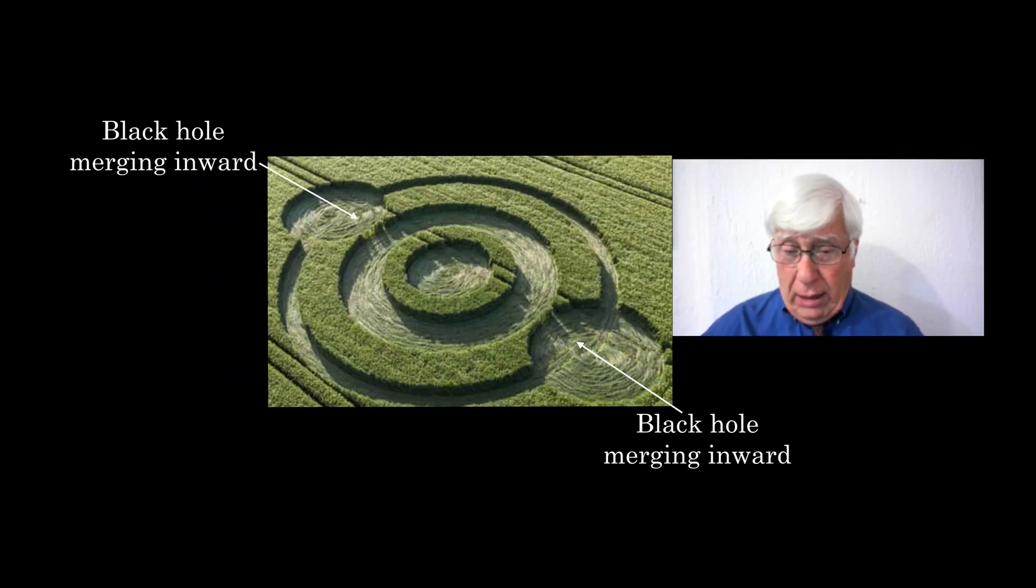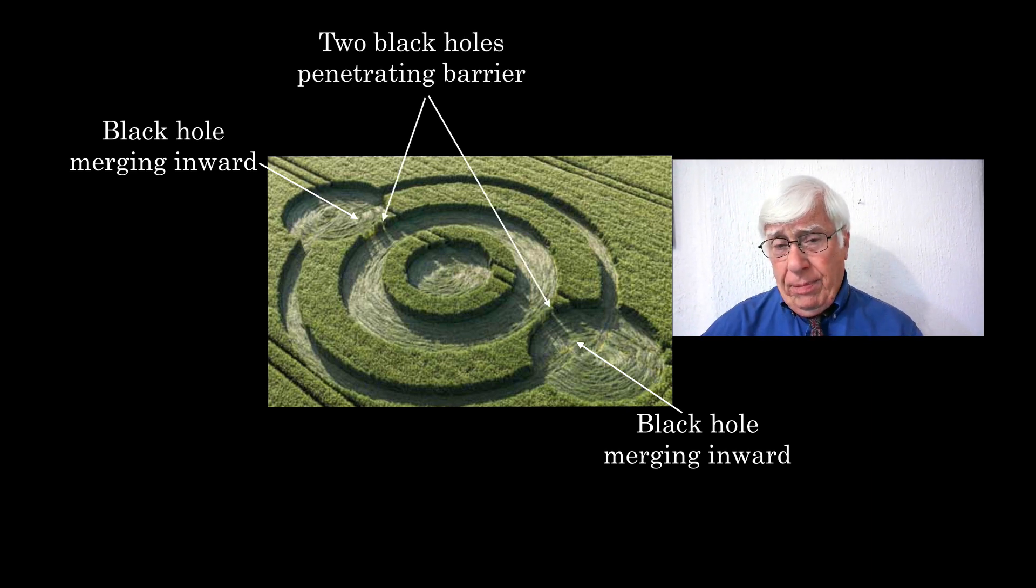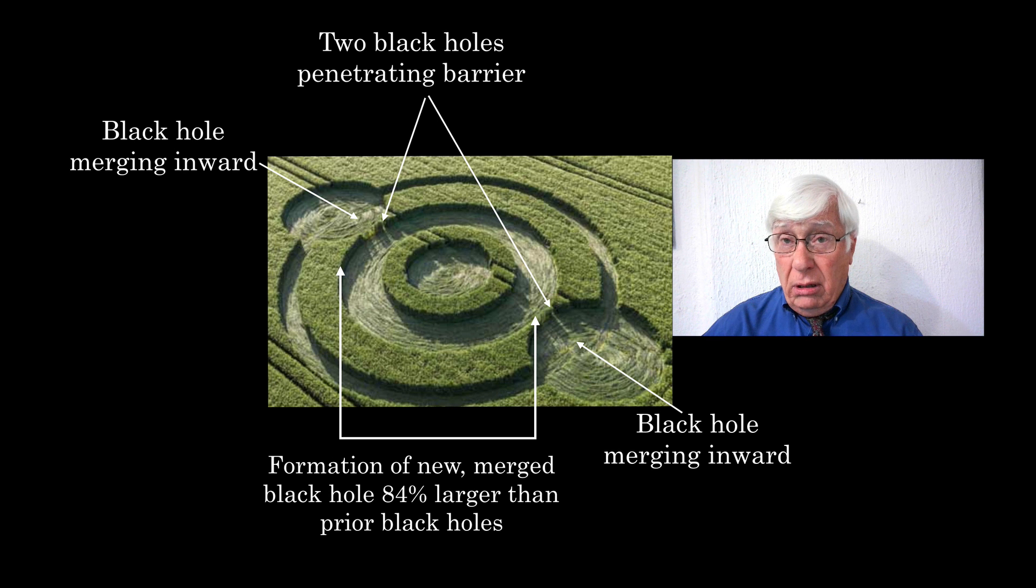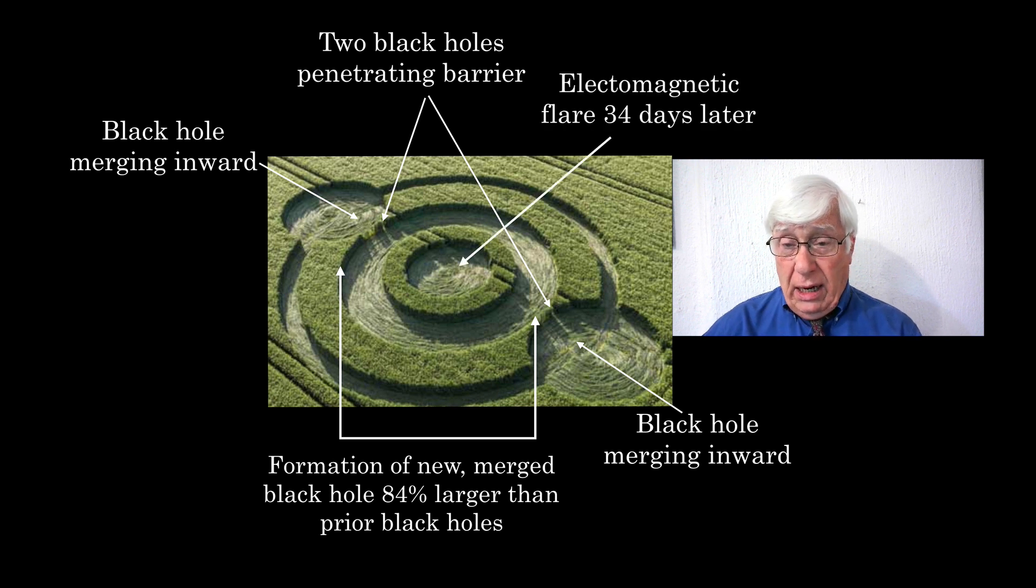So let's summarize what we have discovered so far. We have two black holes that are moving inward towards each other. We have two black holes penetrating these barriers, these very thin, delicate barriers, as if they're moving towards something. We have a final circle that is larger, 84% larger than the prior two black holes. And then we have this electromagnetic flare that occurs 34 days later. That's what we have decoded from this crop circle.